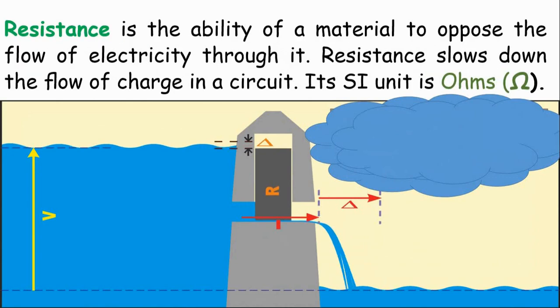Resistance is the ability of a material to oppose the flow of electricity through it. Resistance slows down the flow of charge in a circuit. Its SI unit is ohms.